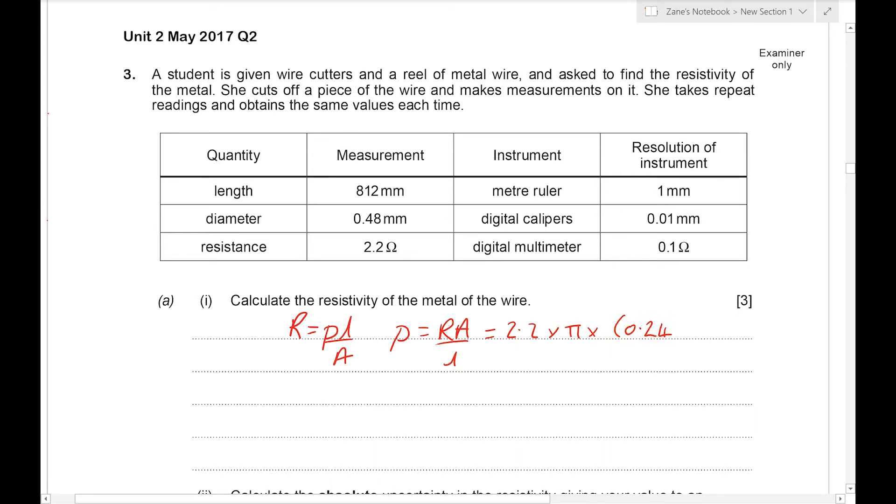So instead of 0.48 millimeters we have 0.24 millimeters. We convert the millimeters to meters by adding a times 10 to the minus three. And don't forget the squared. Take the length of 812 millimeters.